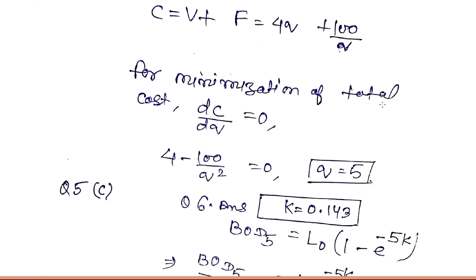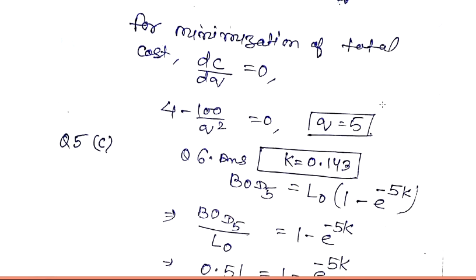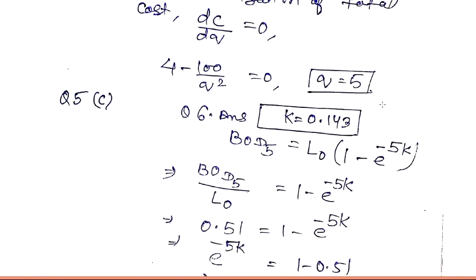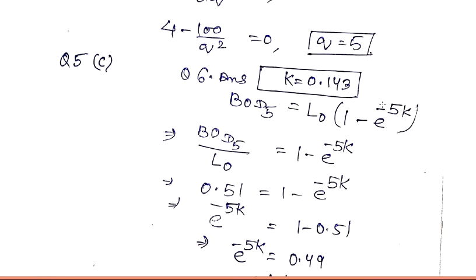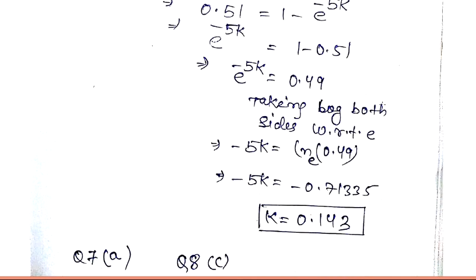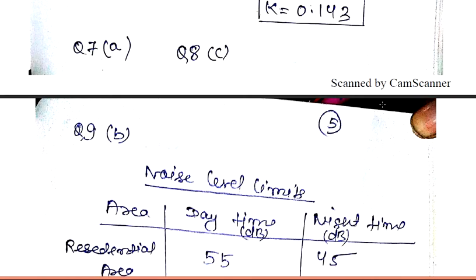Question number five answer is C. For question number six, BOD5 = L0·(1 − e^(−kt)), so BOD5/L0 = 1 − e^(−5k), and with the ratio of BOD5 to ultimate BOD given as 0.51, we find the value of k as 0.143 per day. Question number seven answer is A; question number eight answer is C.